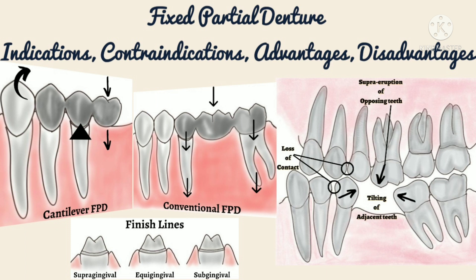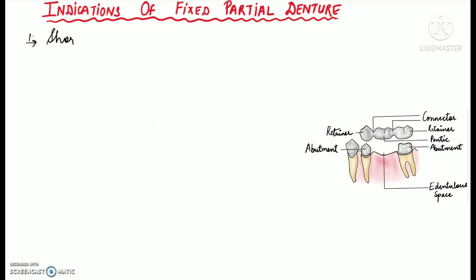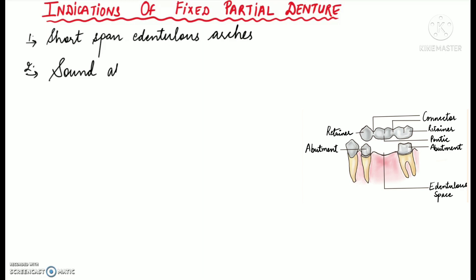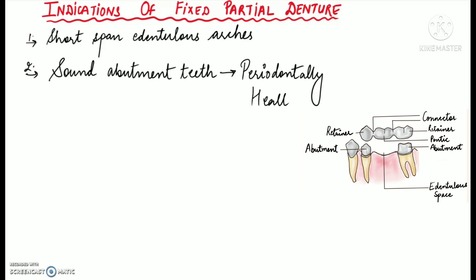Let's start with the indications of fixed partial dentures. A fixed partial denture is commonly indicated in short span edentulous arches where one or two adjacent teeth are missing. FPD is indicated in the presence of sound abutment teeth which are periodontally healthy and which can offer sufficient support to the bridge adjacent to the edentulous space.